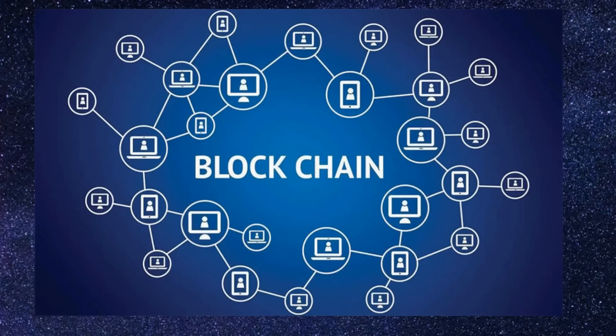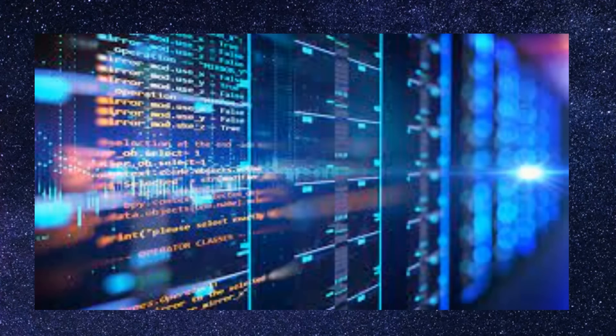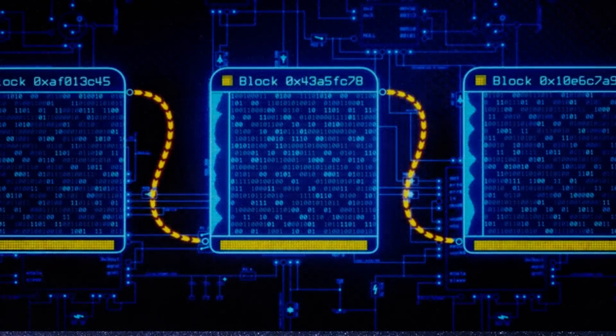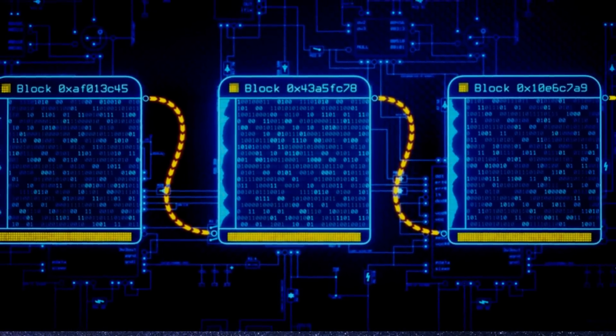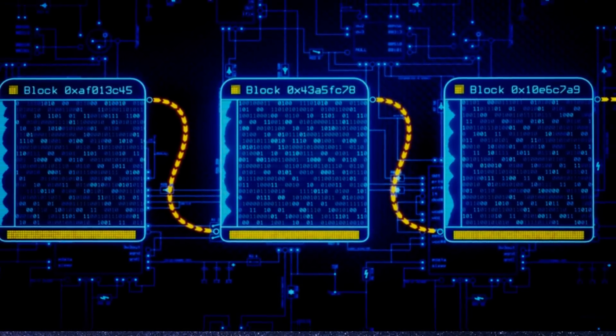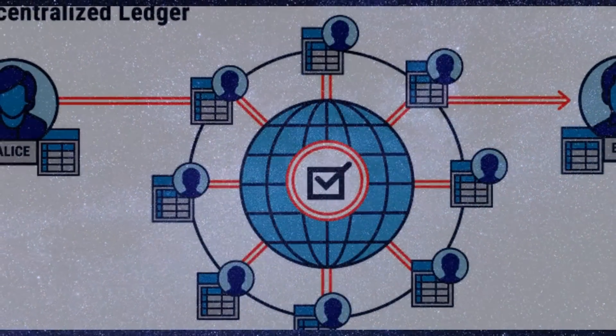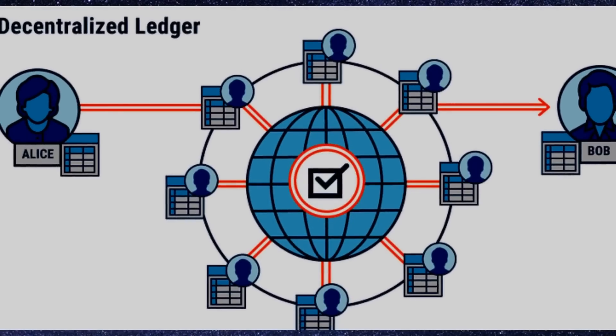Blockchain is the same ledger in decentralized form. It is made up of blocks forming a chain. Every single block contains a single particular record. These blocks are linked with each other in sequence, forming a chain of blocks structure for maintaining records known as a ledger based on blockchain technology.